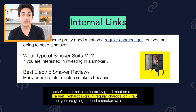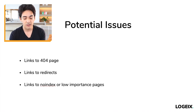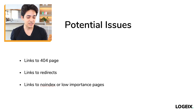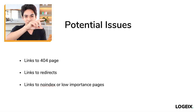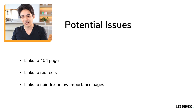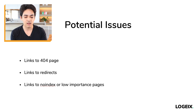The final thing we're going to audit is internal links — links between different pages on your own website. Potential issues: links to 404 pages (broken links), links to redirects (better to link directly to the correct page), redirect chains where A redirects to B redirects to C and so on — you just want to link directly to the final destination. Also avoid linking to no-index or low-importance pages. A redirect chain wastes crawl budget and is just poor practice.